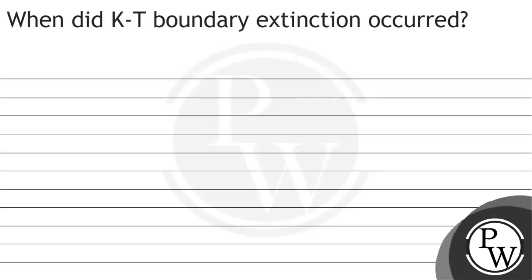Let's read the question. The question says, when did KT boundary extinction occur? So we have been asked about a major mass extinction. For this question, our key concept would be KT extinction.